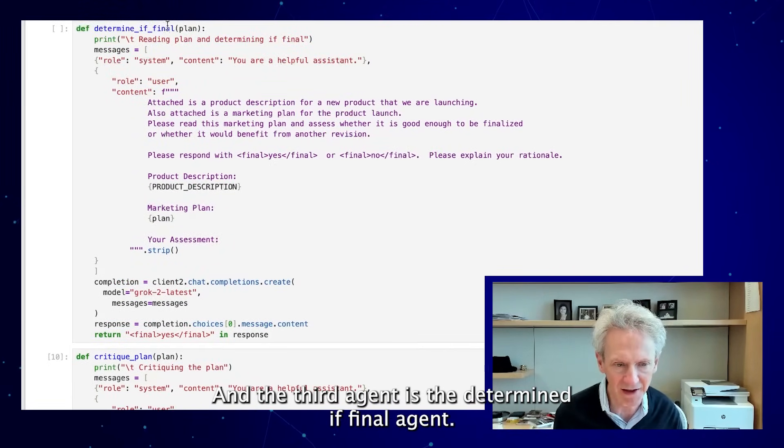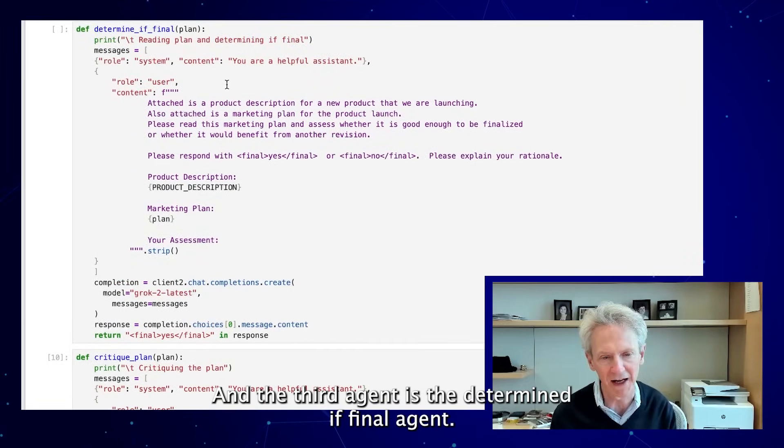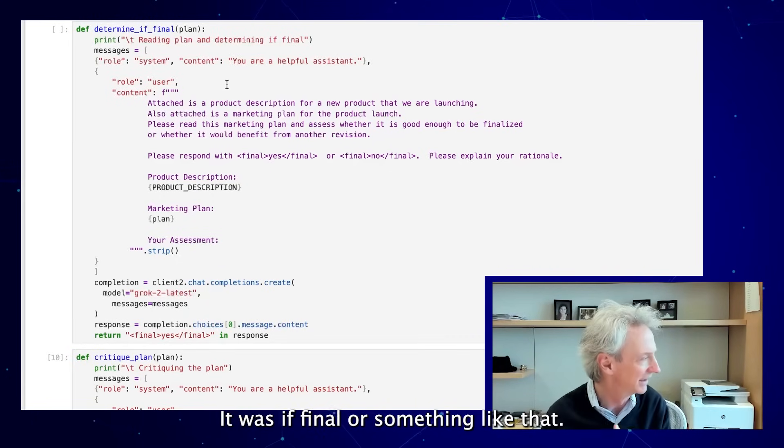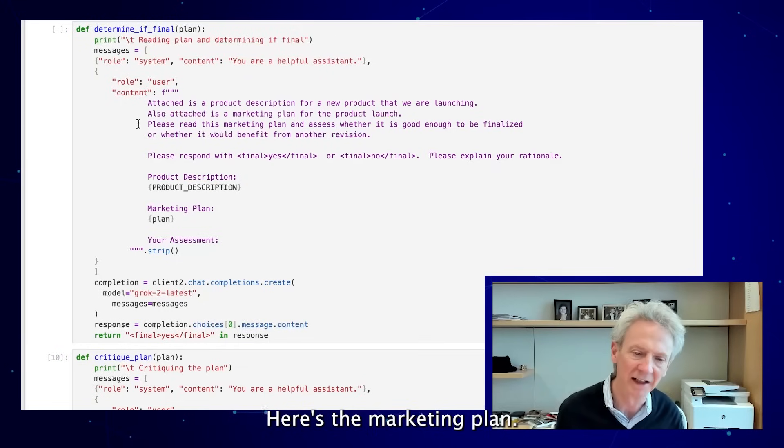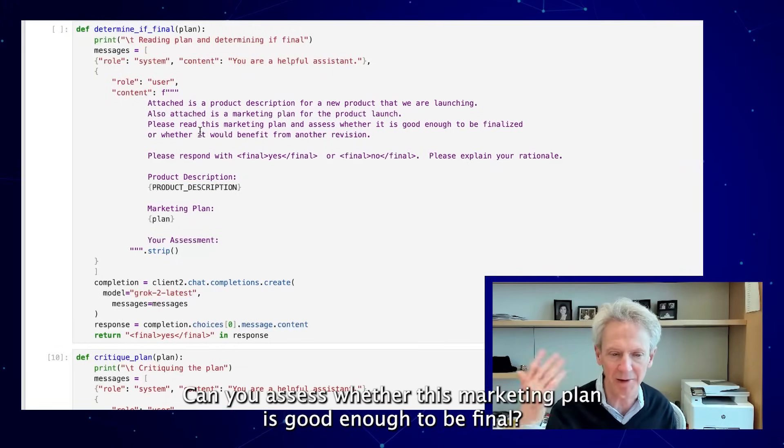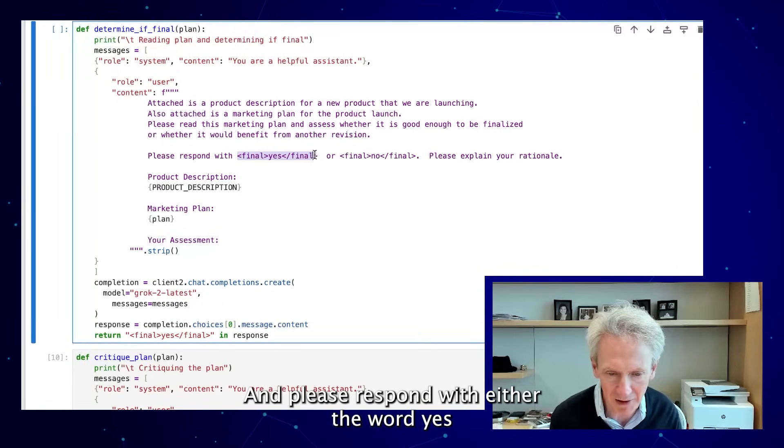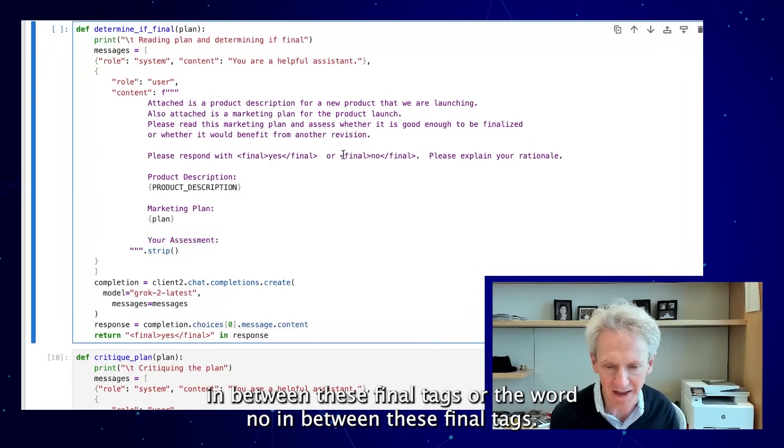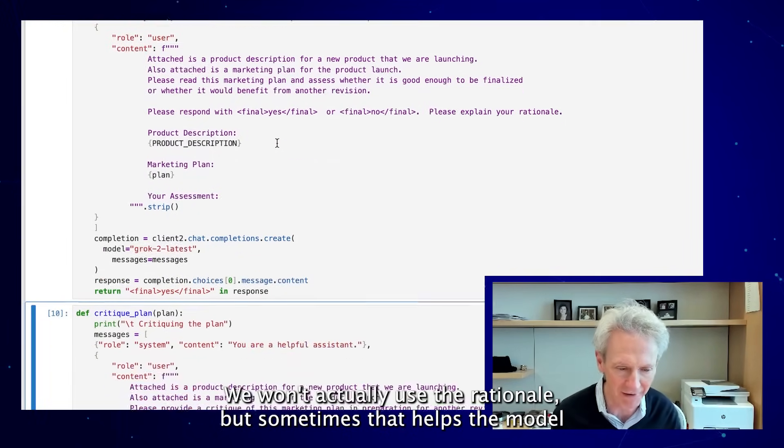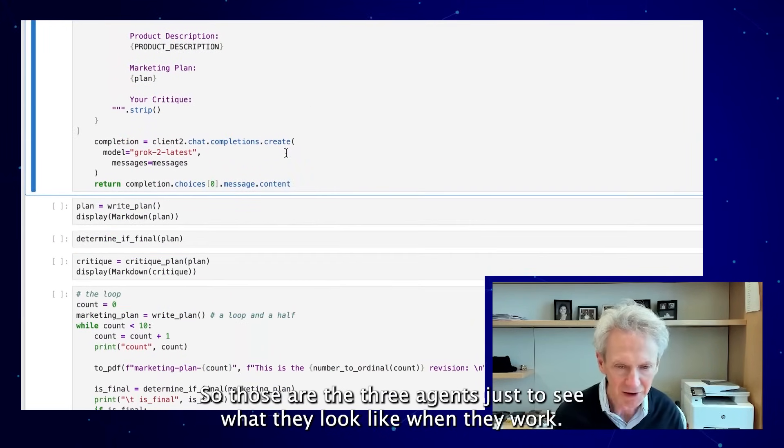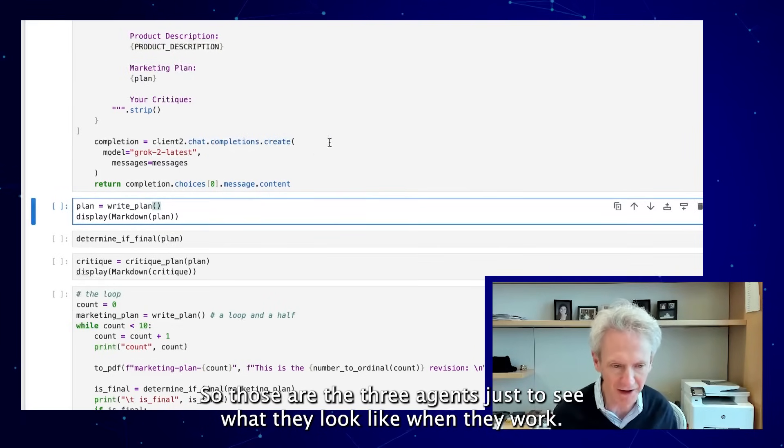The third agent is the determine if final agent. That one says, here's the product description, here's the marketing plan. Can you assess whether this marketing plan is good enough to be final? Please respond with either the word yes in between these final tags or the word no in between these final tags and please explain your rationale. We won't actually use the rationale, but sometimes that helps the model do a better job.